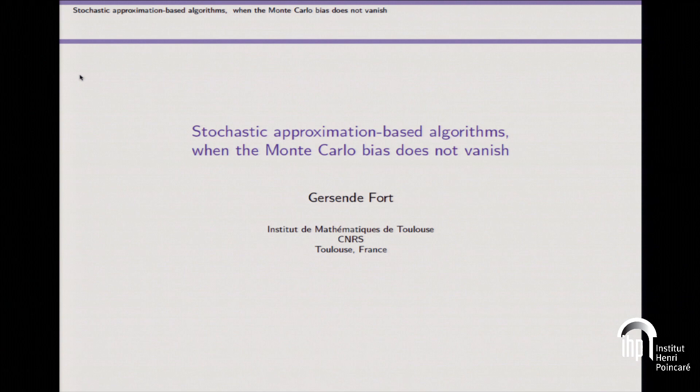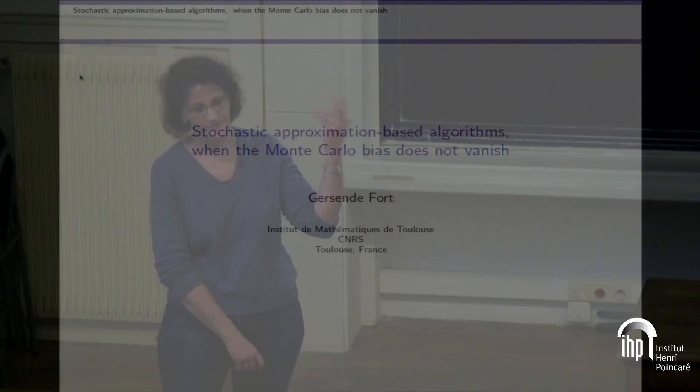First, thank you to the organizer for the invitation to this workshop. The goal of this talk is to discuss what happens when you cannot implement exactly a well-known or deterministic optimization algorithm. You cannot implement it for different reasons, and typically you have to introduce a perturbation. The idea is to determine what conditions on this perturbation ensure that the perturbed algorithm inherits the asymptotic and convergence behavior of the exact algorithm.